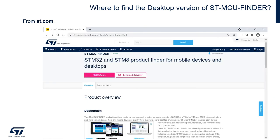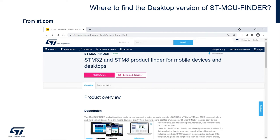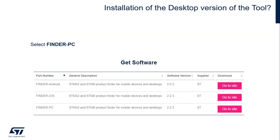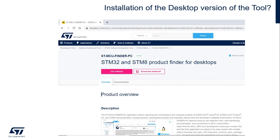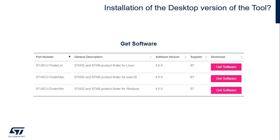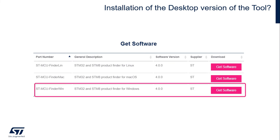What about the desktop version? You can find it on our website at ST.com. Search for ST-MCU-Finder, which will bring you to a page where you click on Get Software. That will bring you to a section where you click on Go to Site from the Finder PC. You will land on the STMCU-Finder-PC page. Click on Get Software and then download the installer according to your OS — we have the Linux version, the Mac version, and the Windows version.